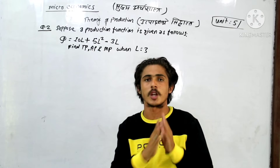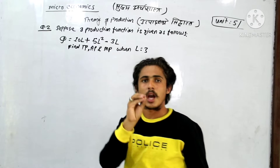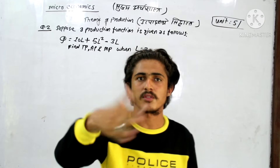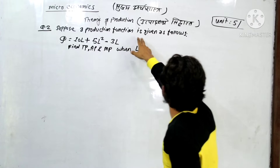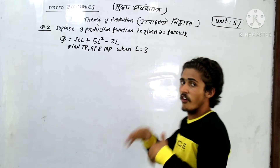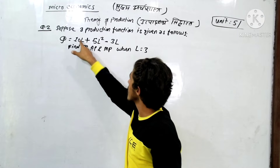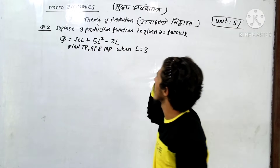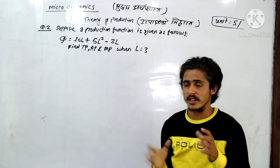Numerical problem solve. Suppose a production function is given as follows: Quantity is equal to 10L plus 5L squared minus 3L cubed.